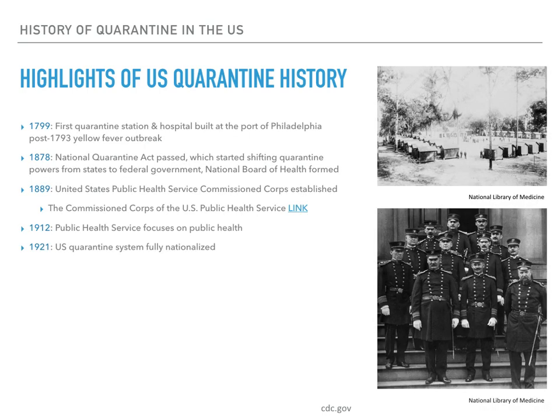In 1889, Congress established the U.S. Public Health Service Commissioned Corps to lead and carry out quarantine and isolation efforts. Because of the broadening responsibilities of the Marine Hospital Service, its name was changed in 1902 to the Public Health and Marine Hospital Service. As the emphasis of its responsibilities shifted from sailors to general public health, the name was changed again in 1912 to simply the Public Health Service.